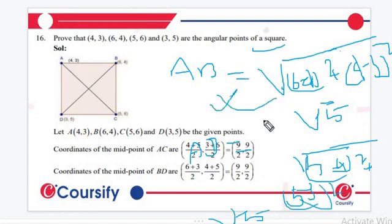So AB is equal to this length and this length are equal. Similarly if this and this, that's why it will be also equal.